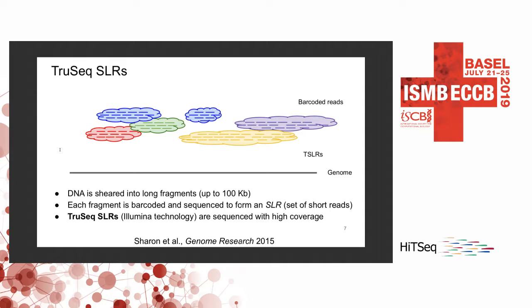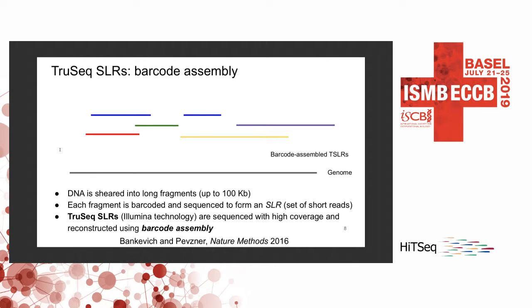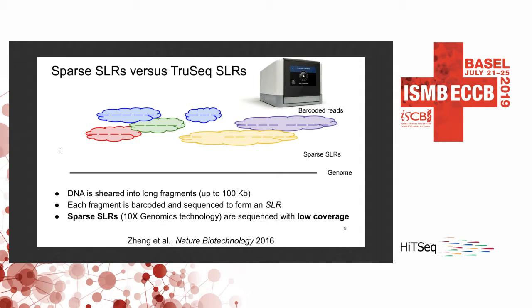Regarding specific SLR generation technologies: TruSeq SLR, which is an Illumina technology, sequences genome fragments with very high coverage, allowing reconstruction of individual genome fragments from barcoded reads using specialized assembly algorithms. These reconstructed genome fragments can later be used as actual long reads. Conversely, sparse SLRs, more commonly known as linked reads, are sequenced with low coverage that doesn't enable barcode assembly, but because of the low sequencing requirements, provide a low-cost alternative to TSLR.